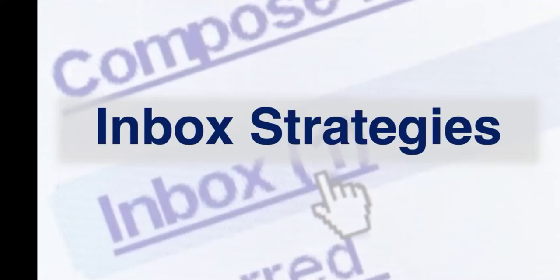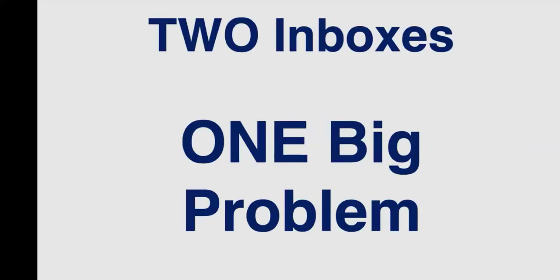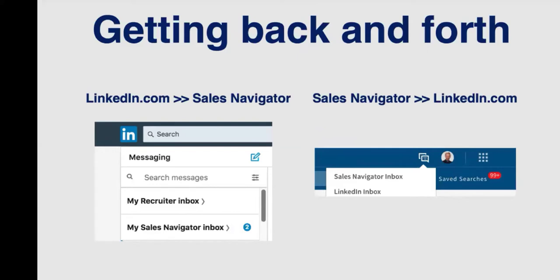The biggest struggle people have is that you get two inboxes when you go to Sales Navigator: the Sales Navigator inbox over here and the LinkedIn.com inbox over there. They're two separate places, two inboxes, but it's one really big problem. This is one of the single biggest problems with Sales Navigator. You can get back and forth between your two inboxes — that's been enhanced — and it's about as simple as it can get.